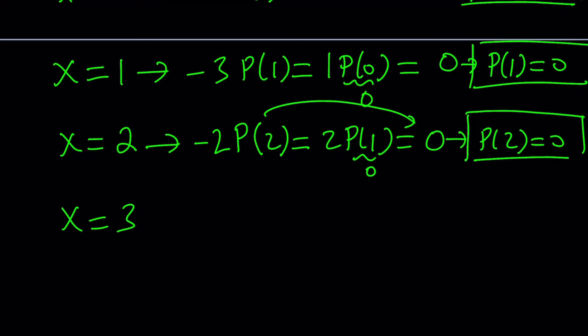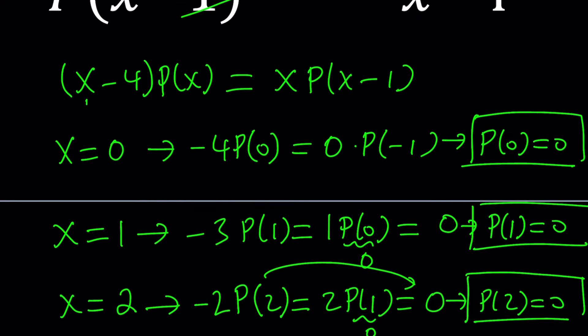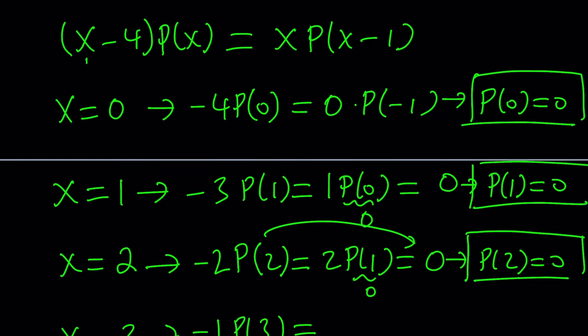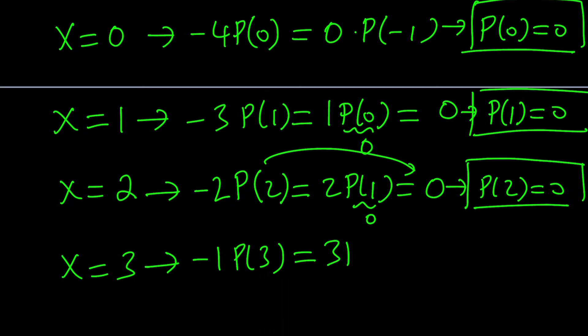X equals 3. When you replace X with 3, using our original equation, negative 1 times P of 3 is going to equal X, which is 3 in this case, times P of 2. And again, same idea applies here. P of 3 will be 0.